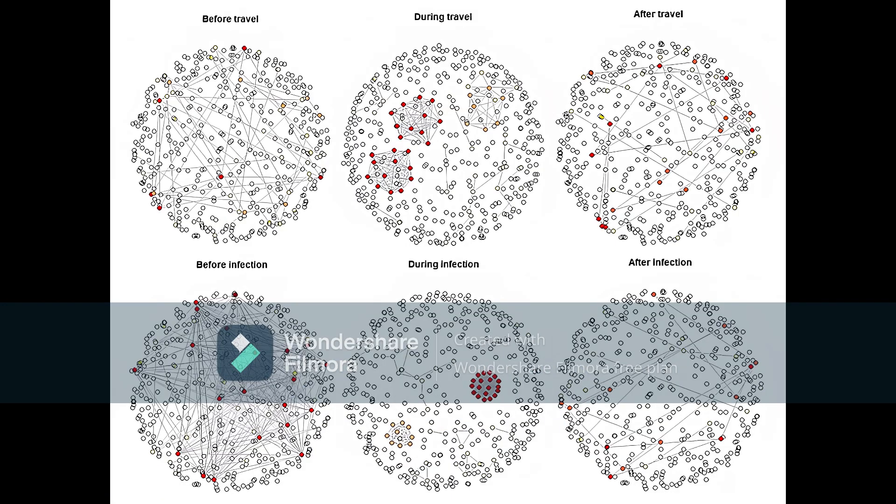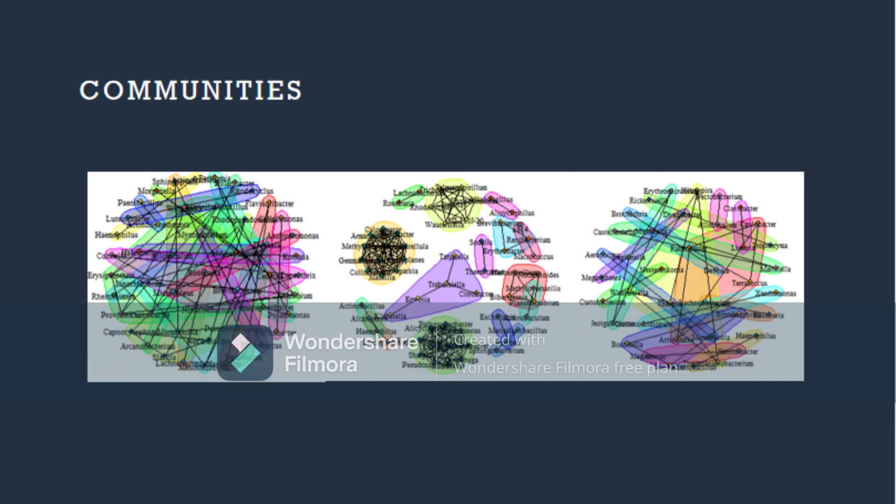The importance of genera in the networks was analyzed using different measures of centrality and identifying bacterial communities within the networks using different clustering algorithms. The proportions of the phyla between layers were also analyzed using the time series data.